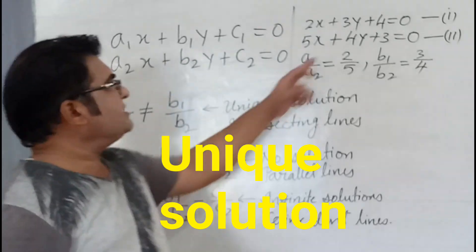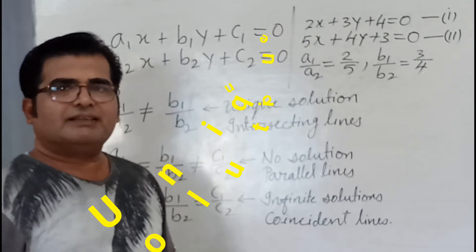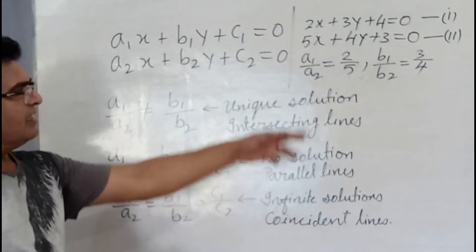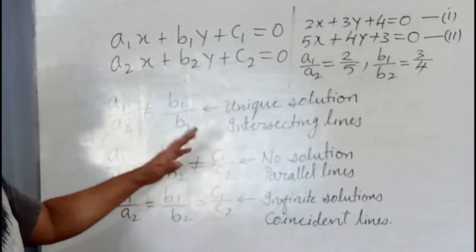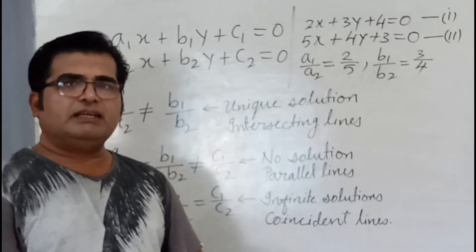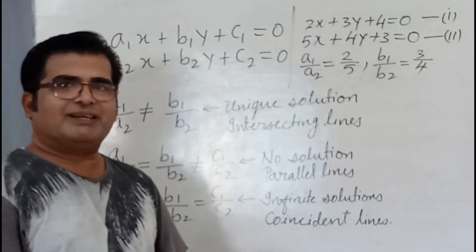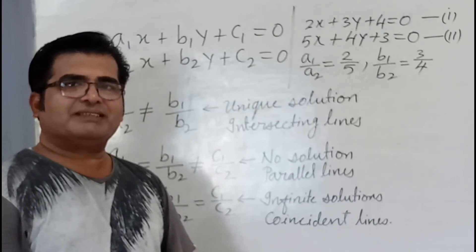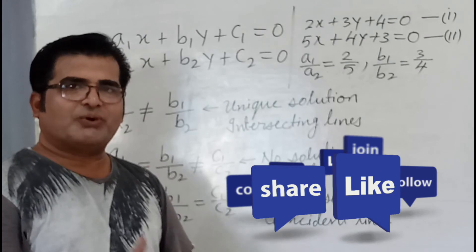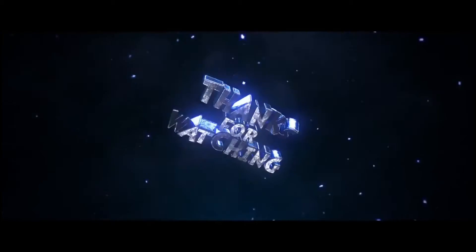If you find c1/c2, it is 4/3, which is also not equal. This is how you test these conditions. This is the beginning of simultaneous linear equations in two variables. I hope you have understood. Please subscribe to my channel, share it, and press the bell icon to get all notifications.